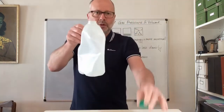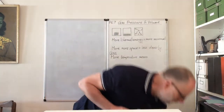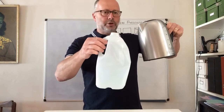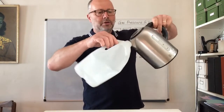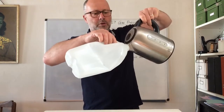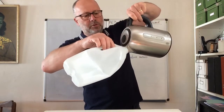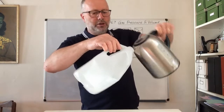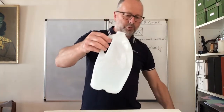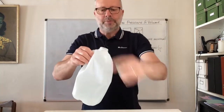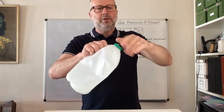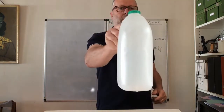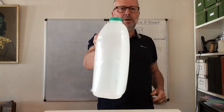So here's my milk bottle. Here's some freshly boiled water from the kettle. Now watch what I do. Just a little bit of water in the bottom. Put the lid on, give it a shake. Look at the shape of it now.